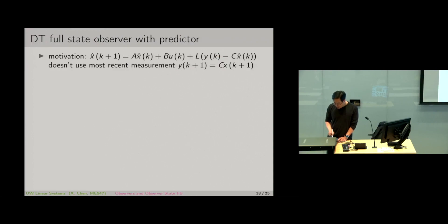It's only using Y(K). However, when we are at time K+1, we already have a new measurement of the output.